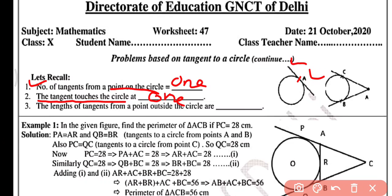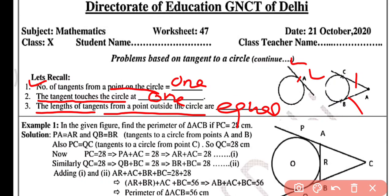The length of tangents from a point outside the circle are equal. You can see here AC and AB are the tangents drawn from point A to the circle, so the lengths of tangents drawn from an exterior point are equal. Keep this in mind.